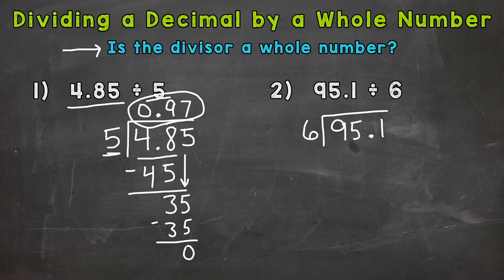Now we always ask ourselves this question, although we know the answer to it in this video. You will get to a point where you have mixed up problems. So 95 and 1 tenth divided by 6. Is the divisor a whole number? Yes. So we can bring our decimal straight up. It's going to be straight up within our answer there.